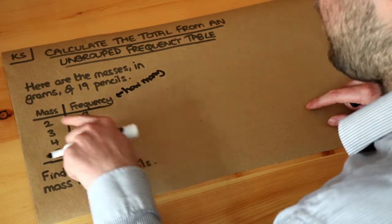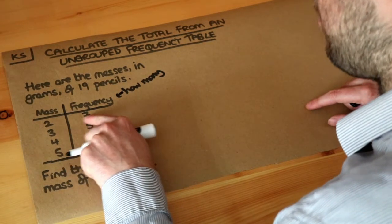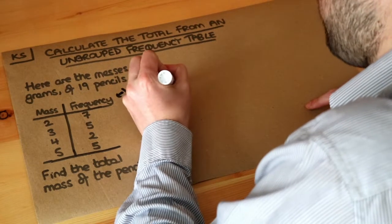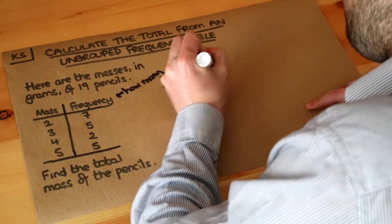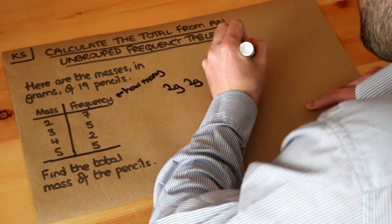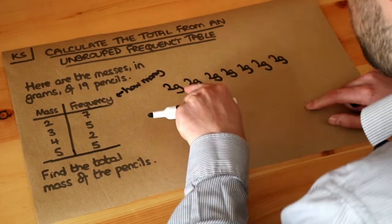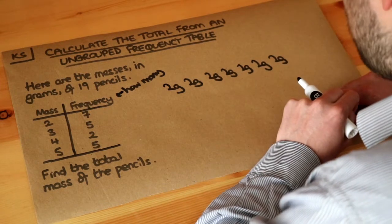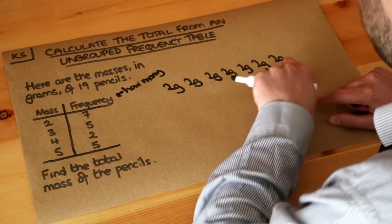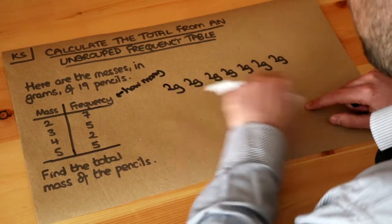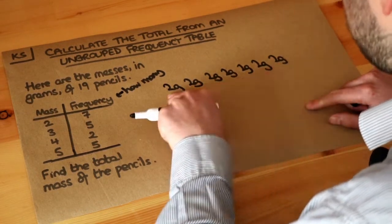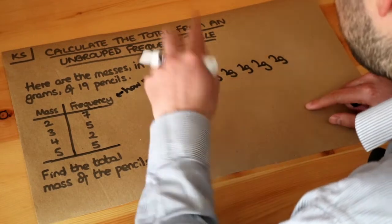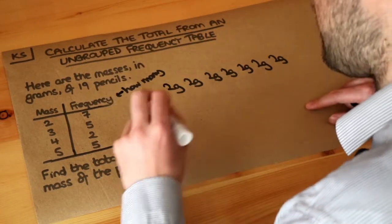We've got 7 pencils with a mass of 2 grams. So if we were to write out the masses of all the pencils, we'd have 7 pencils each with a mass of 2 grams. So what's the total mass of those particular pencils? Well, we would just do 7 times 2 — we'd add up those numbers, which is the same as doing 7 times 2 — and that's 14.